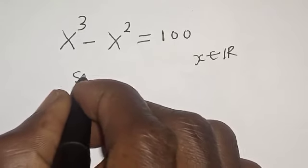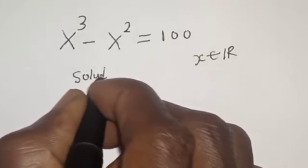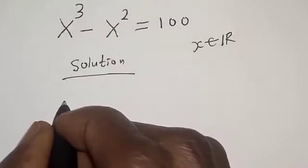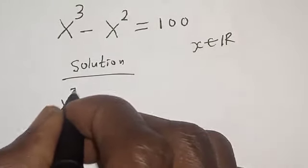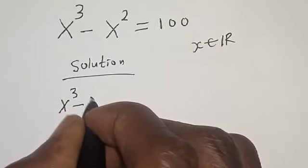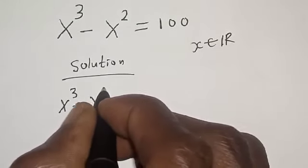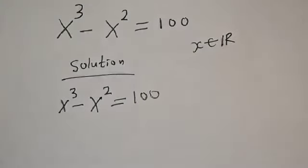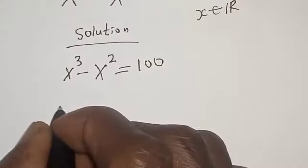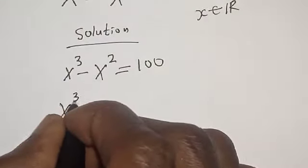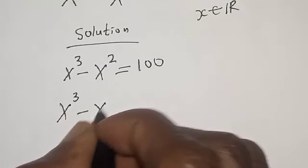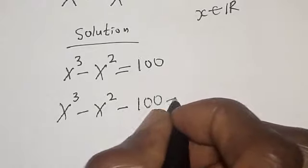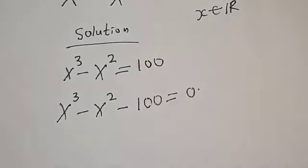Solution. We have the given equation: x raised to power 3 minus x squared is equal to 100. Then we rearrange to get x raised to power 3 minus x squared minus 100 is equal to 0.